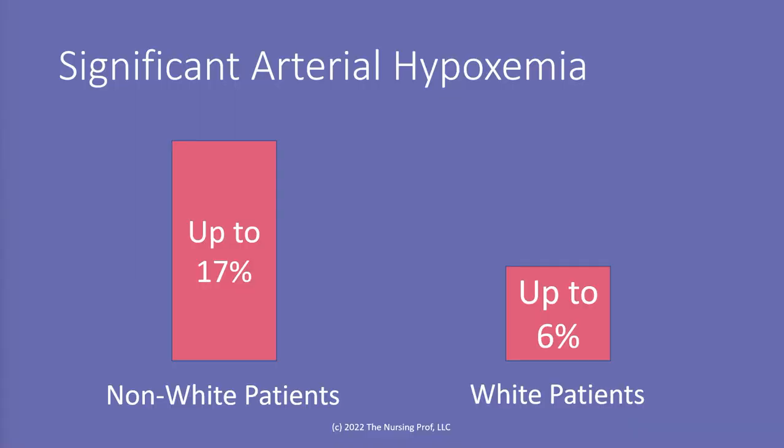What was found was that there was significant arterial hypoxemia. In non-white patients, up to 17% had significant arterial hypoxemia when the pulse ox was reading that the patient was above 92%. In white patients, only up to 6% had significant arterial hypoxemia. So you can see there's a significant difference between our Caucasian patients and our non-Caucasian patients in how well the pulse ox is working.